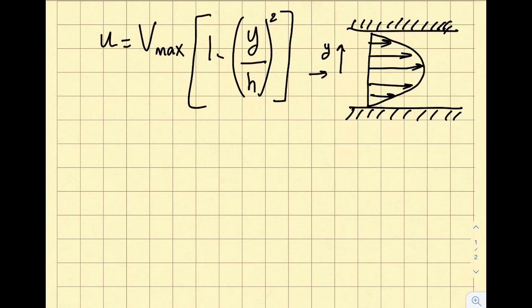At y equals zero, I'll get myself a V max. So you can observe from this equation as well, if you plug y equals zero, you get V max. Obviously the velocity going up in this particular case will be zero. So for this flow, find the velocity potential.